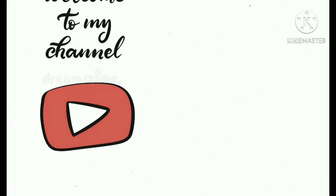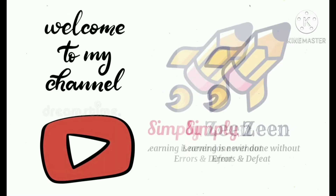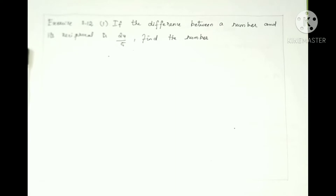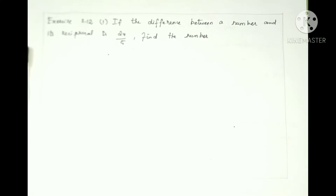Hello friends, welcome to my channel SimpliZee, it's me Zareen. Exercise 3.12, first question: if the difference between a number and its reciprocal is 24 by 5, find the number.